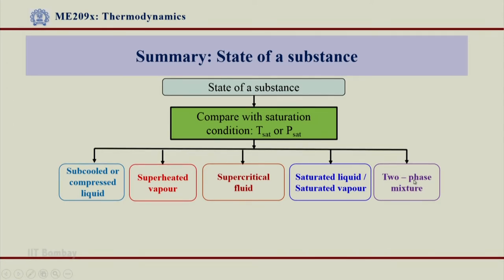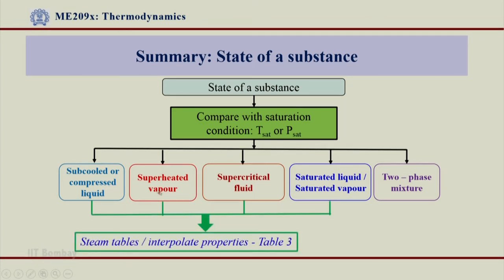The properties of this two-phase mixture are a question mark right now. If I want to get the properties of all these regions, I will go to the steam table, do some interpolation, and I can use Table 3 — and even Table 1 and Table 2 — to get those properties directly. The problem is the two-phase region, where liquid and vapor exist together. I do not know where to go in the steam table for that as of now.